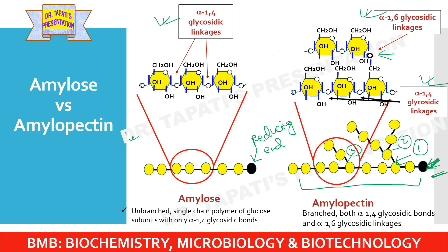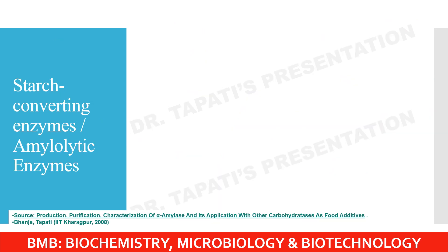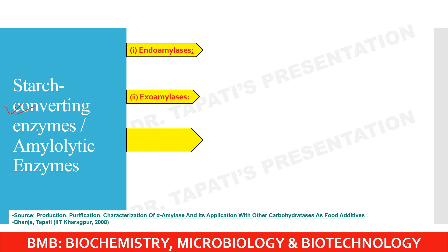In recent decades there has been a shift from acid hydrolysis of starch to the use of starch converting enzymes, due to disadvantages of acid hydrolysis — it requires corrosion-resistant materials, more energy for heating, and is relatively difficult to control. There are mainly four groups of starch converting enzymes: endoamylases, exoamylases, debranching enzymes, and transferases.